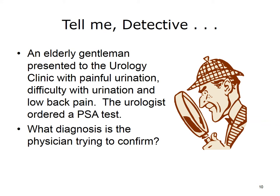Did you guess prostate cancer or cancer of the prostate gland? Prostate cancer is the third most common cause of death from cancer in men of all ages, but it is rare in men younger than 40. The levels of prostate-specific antigen, or PSA, is often high in men with prostate cancer, but may also be high in other prostate conditions. Symptoms include painful urination or difficulty with urination, low back pain, and pain with ejaculation. Treatment may include surgery, radiation therapy, chemotherapy, or control of hormones that affect the cancer.